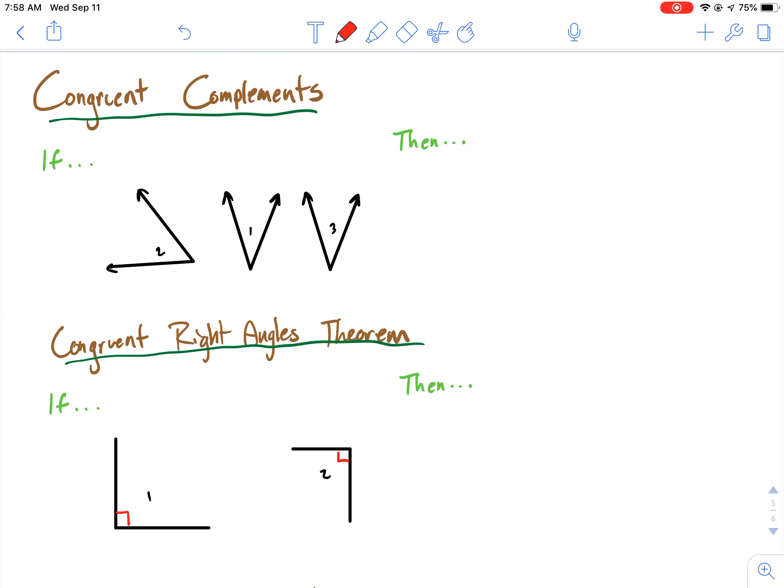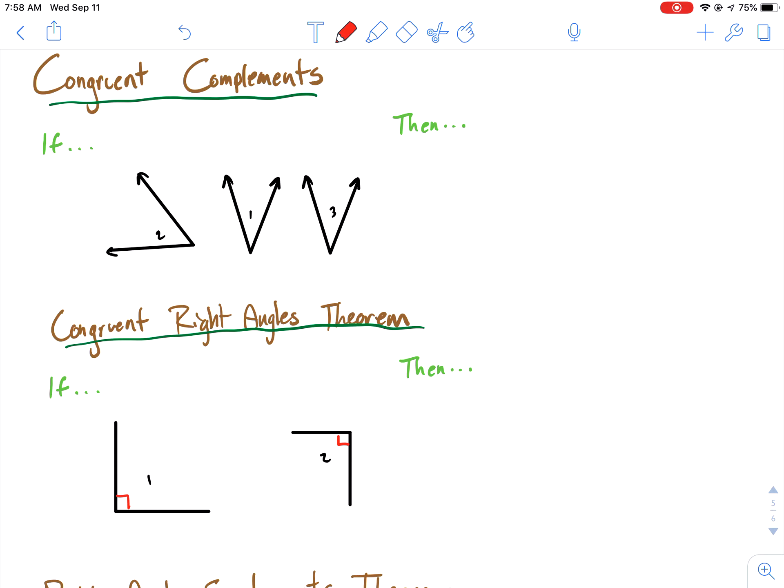Congruent complements, we really don't need to know at this time. Just know that if 1 and 2 are complements, that means they add up to 90, and 3 and 2 are complements, and they add up to 90. And that means the two angles are equal to each other.